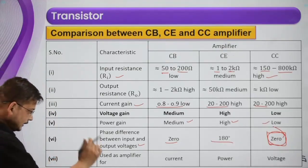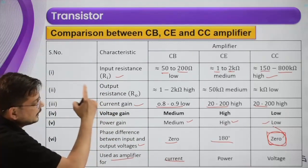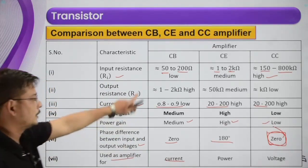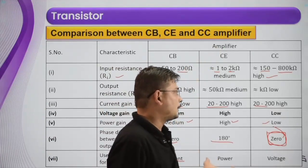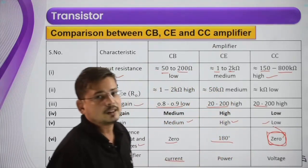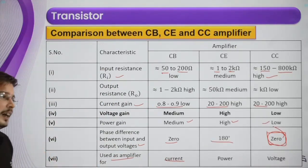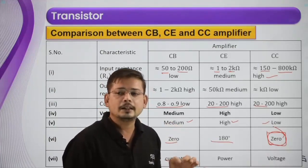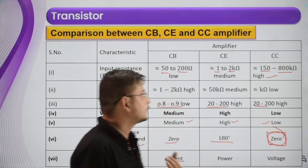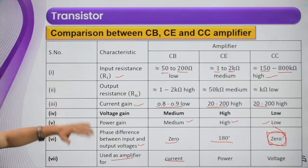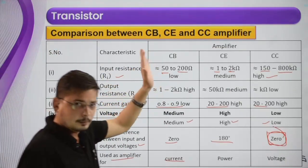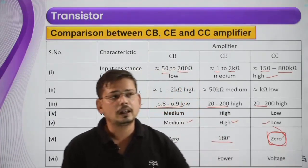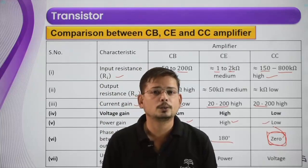To summarize: common base is used for current amplification, common emitter is used for power amplification, and common collector is used for voltage amplification. We have learned what an amplifier is, the different types of transistor amplifiers, and their comparison. This concludes our topic on semiconductors. Thank you.